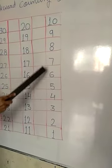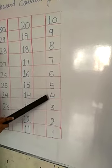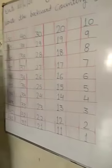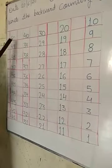9, 8, 7, 6, 5, 4, 3, 2, 1. This is our backward count from 50 to 1.